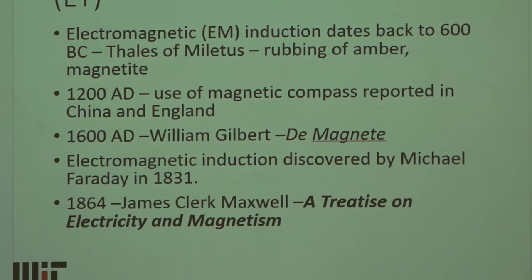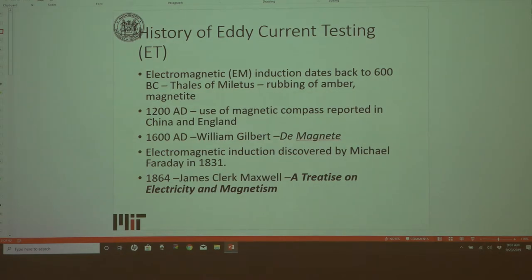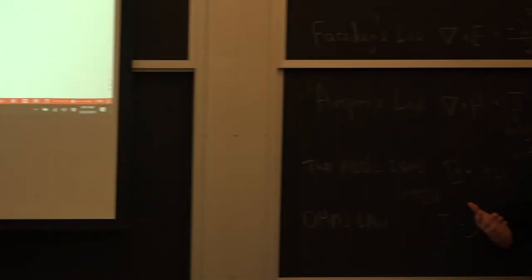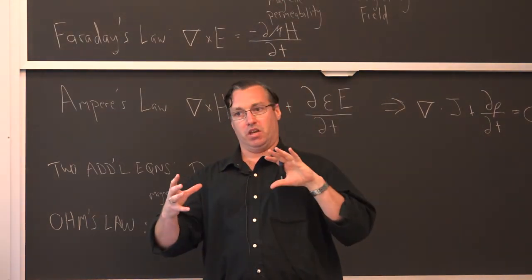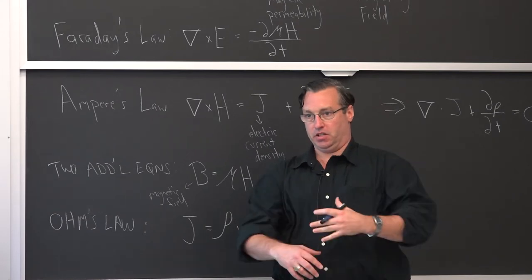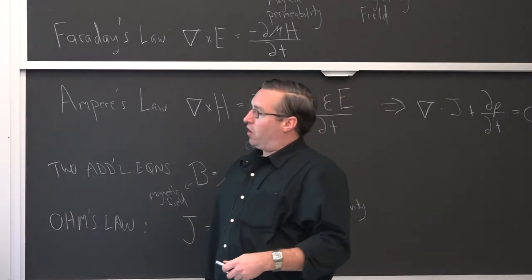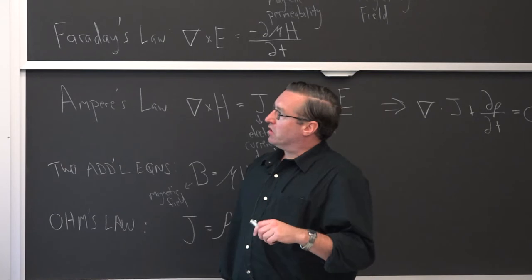Today we're going to discuss eddy current testing, and I wanted to give you a brief background on the history. It dates back to 600 BC and Thales of Miletus, dealing with the handling of materials. The Greek individual was rubbing amber together and noticed that when he rubbed the amber there was a magnetic type effect — same as static electricity from certain types of clothes — but it starts with the rubbing of amber.